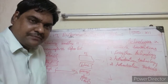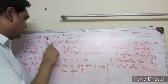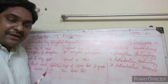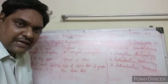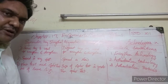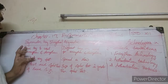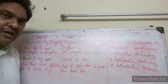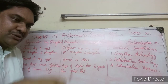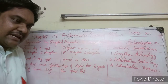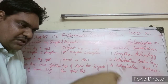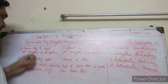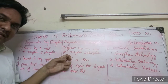The difference between symmetric and asymmetric key encryption is very important. In symmetric key encryption, the same key is used for both encryption and decryption. The sender and receiver share this same key. In asymmetric key encryption, different keys are used — a public key for encryption and a private key for decryption.